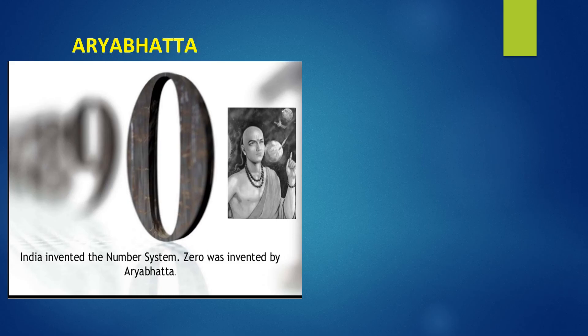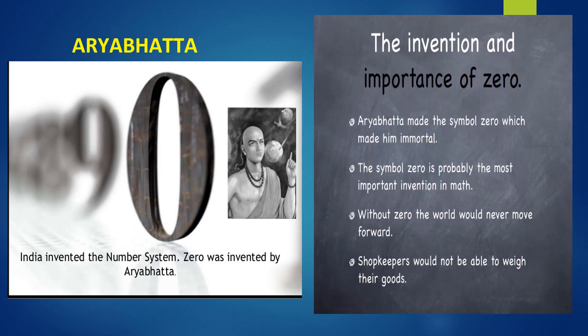The great Indian mathematician and astronomer Aryabhata invented zero. He gave the world zero, for which he became immortal. He was the first one to use zero to define the decimal system. Without zero, the world would never move forward. He did not just use zero as a symbol — he used it meaningfully.